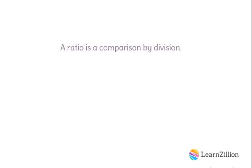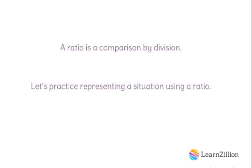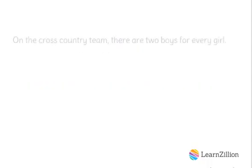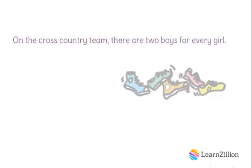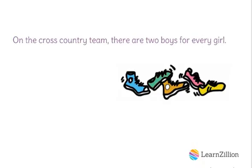A ratio is a comparison by division. Let's practice representing a situation using a ratio. In this situation, we have the ratio: there are two boys for every girl. We can represent this same ratio three different ways. The first way is by using the word 'to.' Since we have two boys for every one girl, we have a two to one ratio of boys to girls.